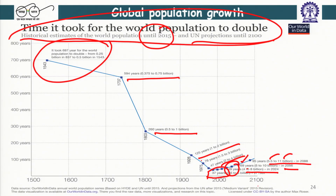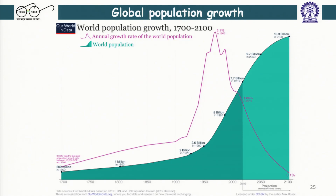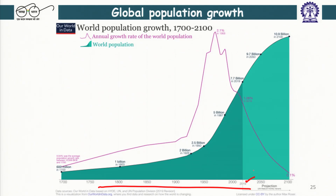If you look at world population growth again, the same data is presented in a slightly different style. On the x-axis is time and on the y-axis is population; the dark region is actual data up to 2019, which is slightly newer than the previous slide. The previous slide had data up to 2015, this is up to 2019, and then the projection runs up to 2100. By 2100 we are projected to be close to 11 billion.